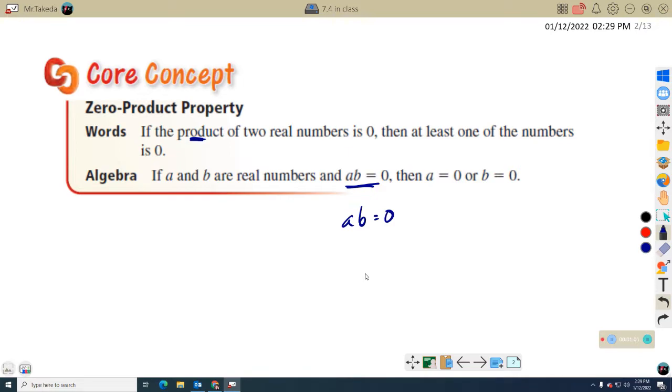You kind of know this already. If I was to just back it up a step, if I said two times X equals zero, well, then you know X has to equal zero. So this is something we call the zero product property. It has a name, something you've known since second grade.